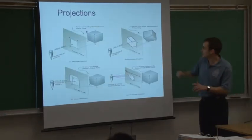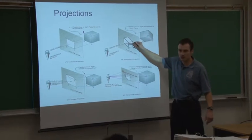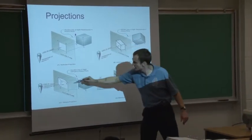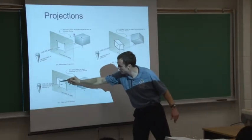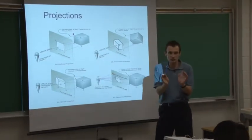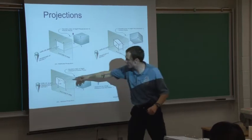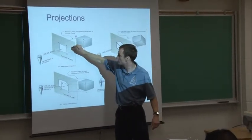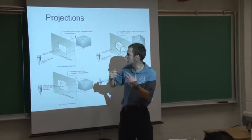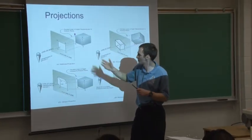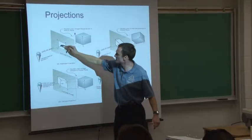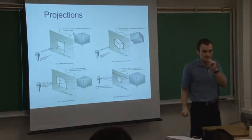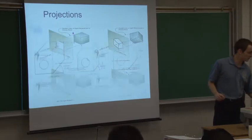With isometric, all three sides are equally distorted. With oblique, the front face is true size and true shape — which is fantastic — but all the other faces are distorted. With multi-view, whatever view you were looking at always had true size and true shape. So that's the technical explanation. What does it actually mean in practice?